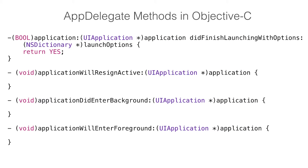These methods manage transitions between the five main application states: active, background, not running, inactive, and suspended. These five states are language agnostic, and the transitions between them are handled identically in Swift and Objective-C.